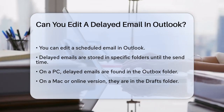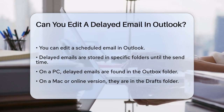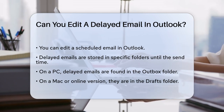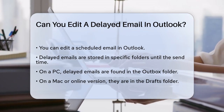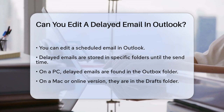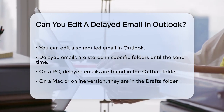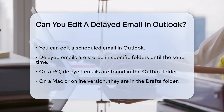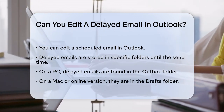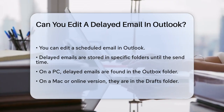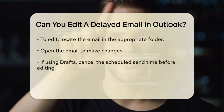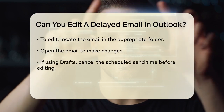When you use the Delayed Send feature in Outlook, the email is stored in a specific folder until the scheduled send time. On a PC, this email will be in the Outbox folder, while on a Mac or using the online version, it will be in the Drafts folder. To edit a delayed email, you need to locate it in one of these folders.